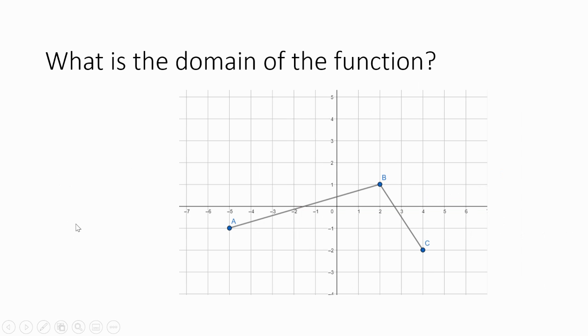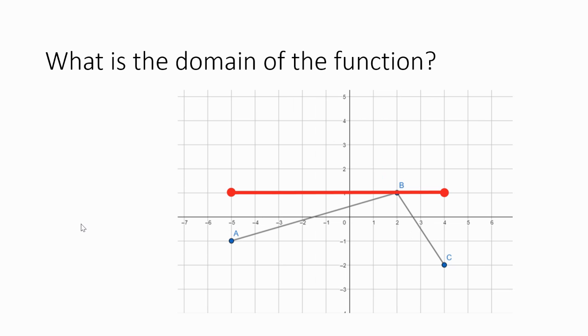Look at another one. Same thing—draw a picture left to right, look at the width, look at the smallest x to the biggest x. The smallest x here is negative five and the biggest x is four. So this function exists between negative five and four. I would write it like this: negative five is less than or equal to x, and x is less than or equal to four.